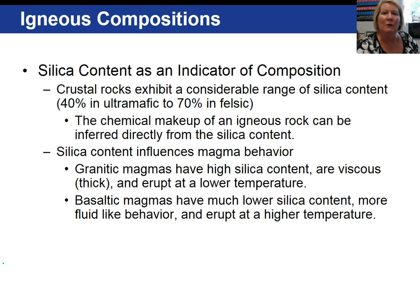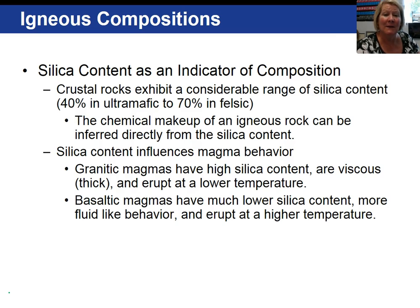Viscous is a term used to describe the resistance to flow of a magma or lava. Basaltic or mafic magmas, on the other hand, have much lower silica content in the range of 50%. They are non-viscous compared to granitic magmas and behave more like a fluid. They are also higher temperature magmas compared to granitic magmas. Granitic or felsic magmas have high silica content and are viscous, compared to basaltic magmas with lower silica content and non-viscous behavior. Silica affects the viscosity of magma.